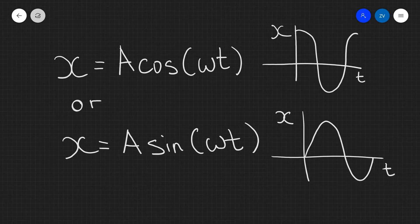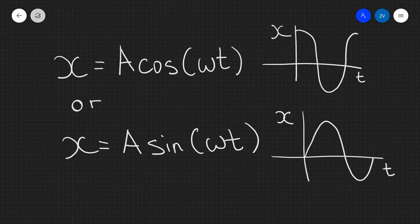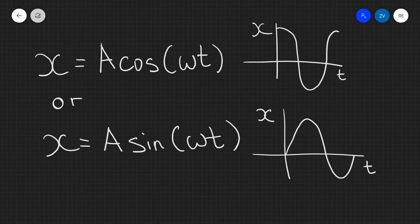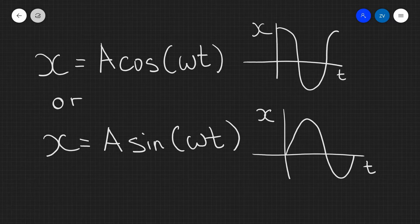Today we'll be looking at the two simple harmonic motion equations: x equals a cosine omega t, and x equals a sine omega t. We've been using those in A-level physics. We know that if an oscillating object starts at maximum amplitude we use the cosine equation, and if it starts with zero displacement we use the sine equation. In this video I'm going to take you beyond the specification to see where those two equations actually come from.